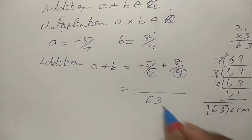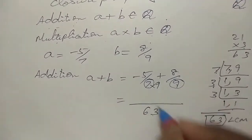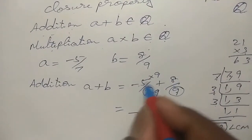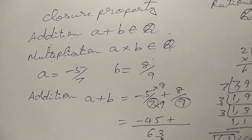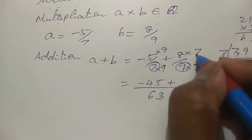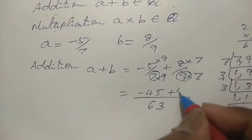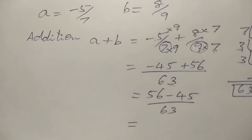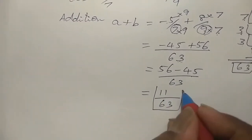Now we put 63 as the denominator. We multiply the denominator 7 by 9 to get 63, so the numerator is also multiplied by 9: minus 5 into 9 equals minus 45. For 9, we multiply by 7: 8 into 7 equals 56. So we get 56 minus 45 by 63, which equals 11 by 63. We got the answer as a fraction again.